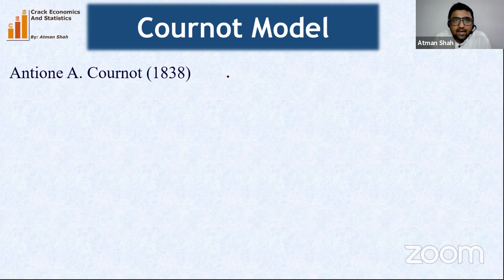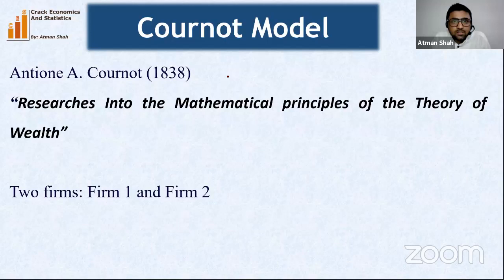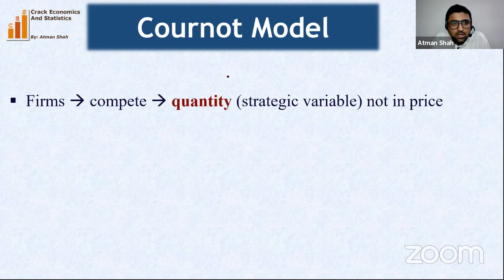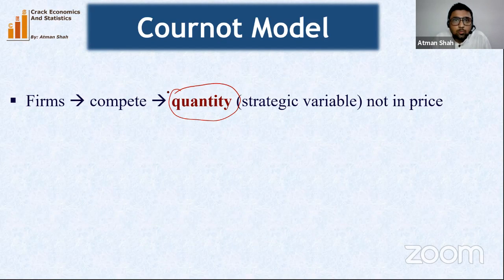Cournot in 1838 developed his model in 'Researches into the Mathematical Principles of the Theory of Wealth.' We have two firms — firm 1 and firm 2 — so total quantity Q equals Q1 plus Q2. Here firms compete in quantity and not in price, so quantity is the strategic variable. Firms take decisions about how much to produce in the market.